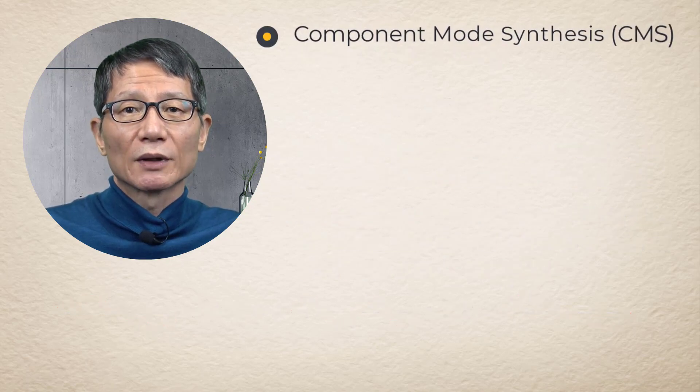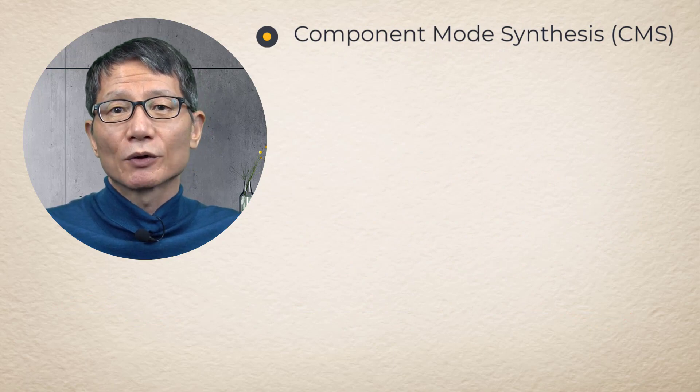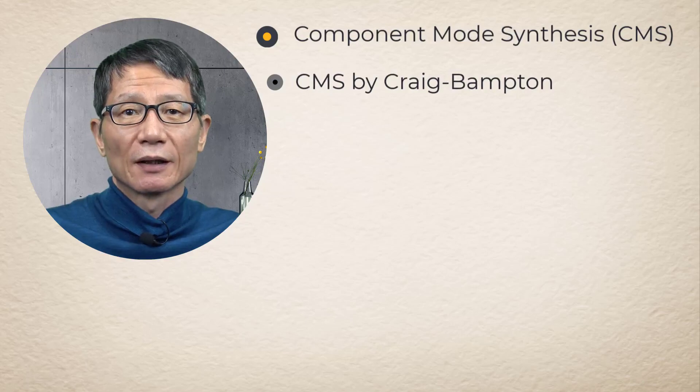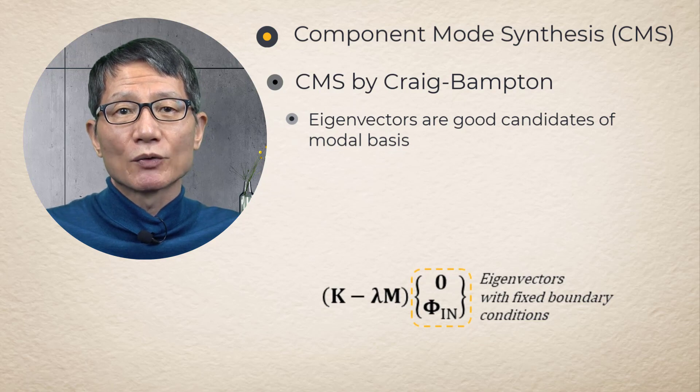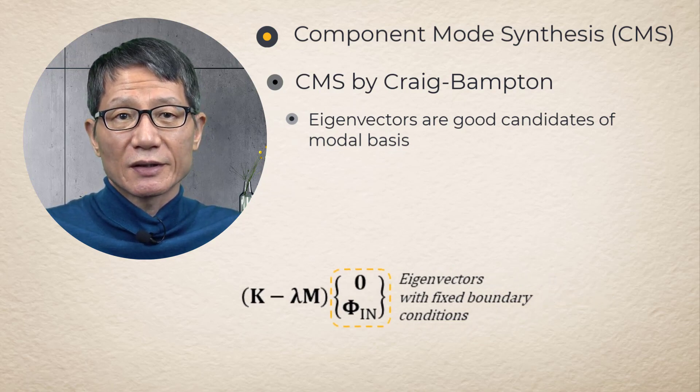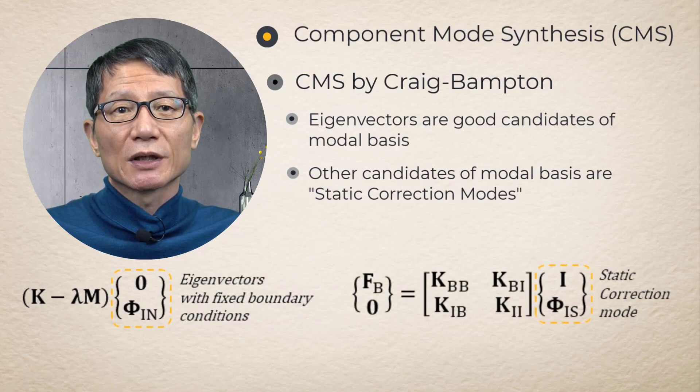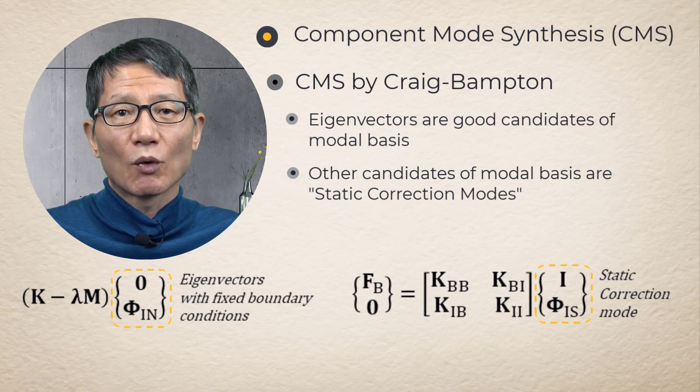Component Mode Synthesis. ANSYS Motion adopts component mode synthesis method proposed by Craig-Bampton. The first candidate modes are the eigenvectors of the modal body obtained after imposing fixed boundary conditions. The second candidate modes are the static solutions after imposing unit displacements on the boundary degrees of freedom one by one.